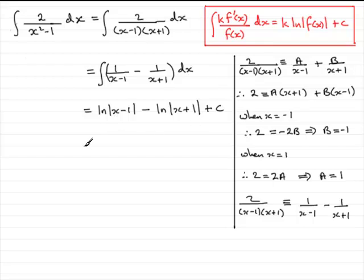Now you could leave it like that, but you could use the law of logs. That is the log of one value minus the log of another value. Log of a, you say, minus log of b is equivalent to the log of a over b. So in this case, we're dealing with natural logs. So it's going to be the natural log of the mod of x minus 1, all divided by x plus 1, and then plus that constant of integration c.